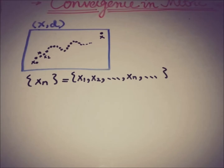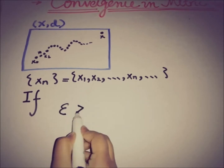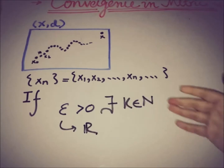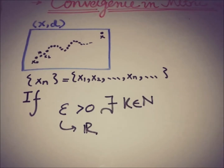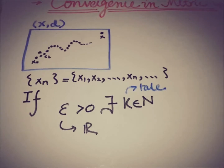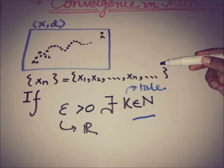This sequence converges to some point x if we have a real number epsilon that is greater than zero. Then there must be a natural number — a tail. We can visualize that we have a sequence x1, x2, and so on to xn, and a point x to which the sequence converges. This k tells us there is a tail somewhere among these elements.